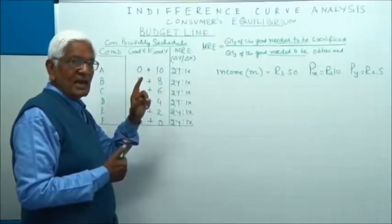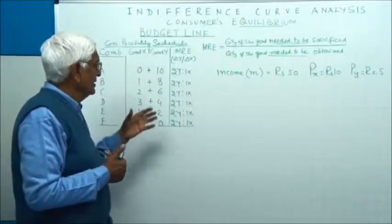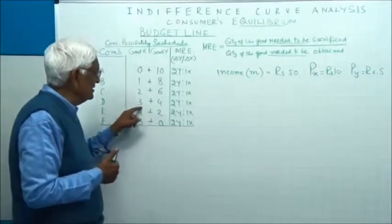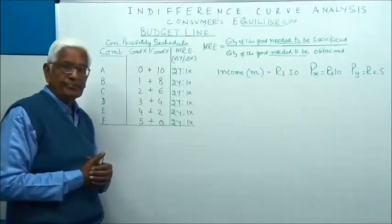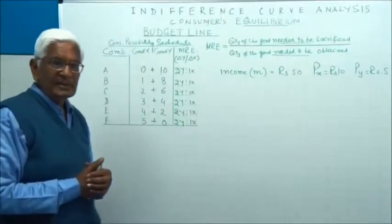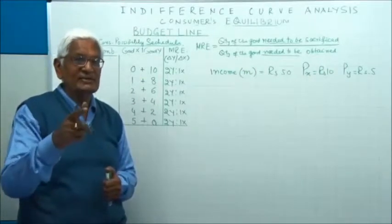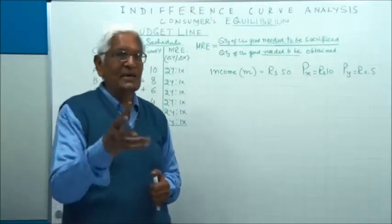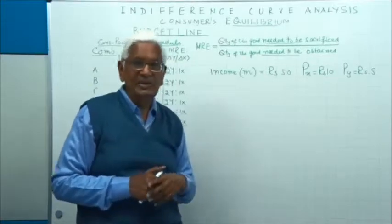Since the price of X is rupees 10 and the price of Y is rupees 5, the consumer has to give up two units of Y in order to buy one unit of X. This is the same with other combinations: if he wants another X, he has to give up another two Y, and so on. This table is prepared on that basis. Remember, here every time he is giving up 2Y to get 1X. In the indifference curve, the situation was different — he was willing to give less and less. Here, he has to give, not wants to give, because the market has fixed prices of rupees 10 and rupees 5.